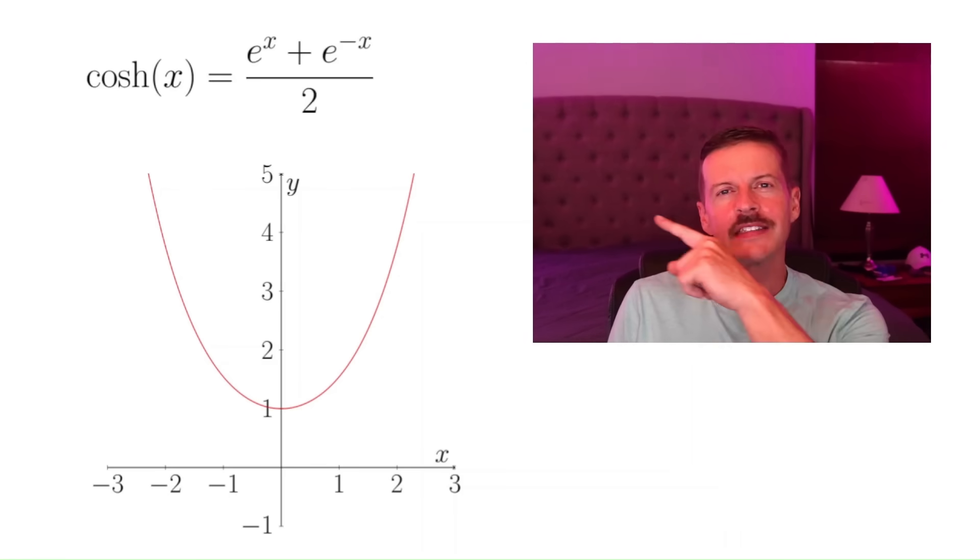Have you ever wondered why we call this function hyperbolic cosine e to the x plus e to the negative x over 2? What does that function have anything to do with the ordinary cosine function?